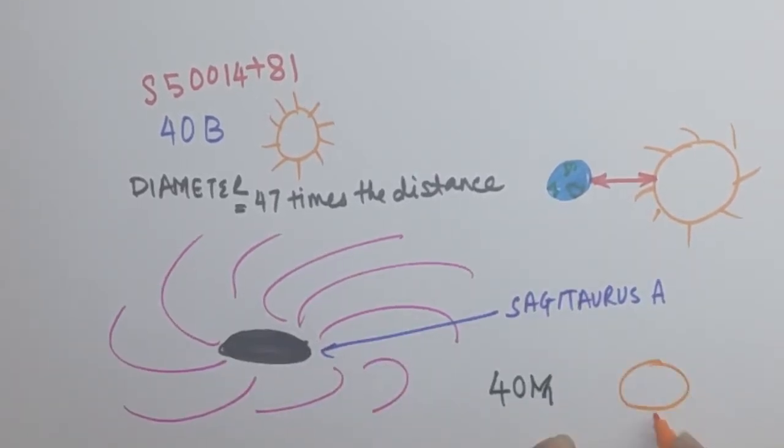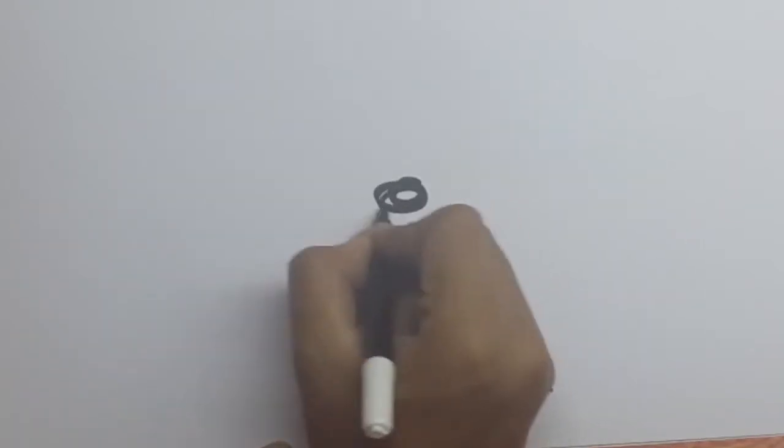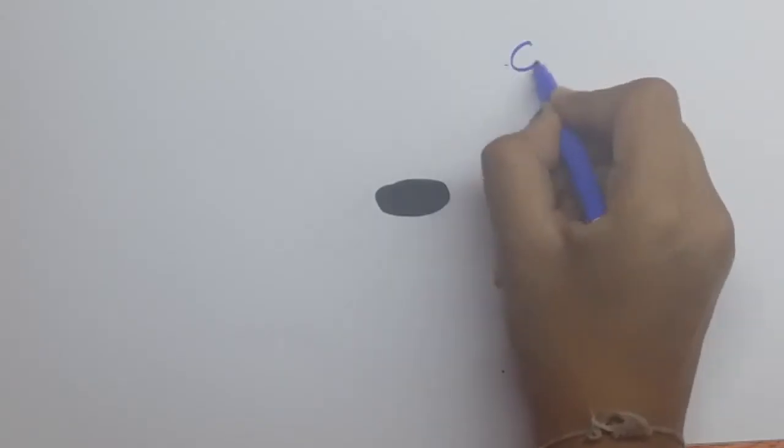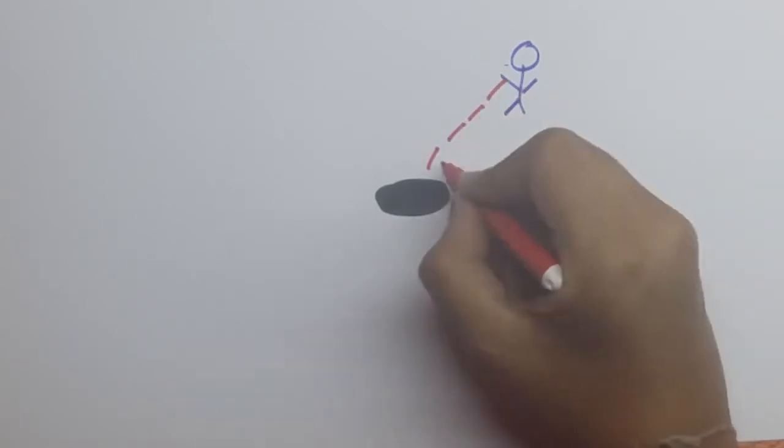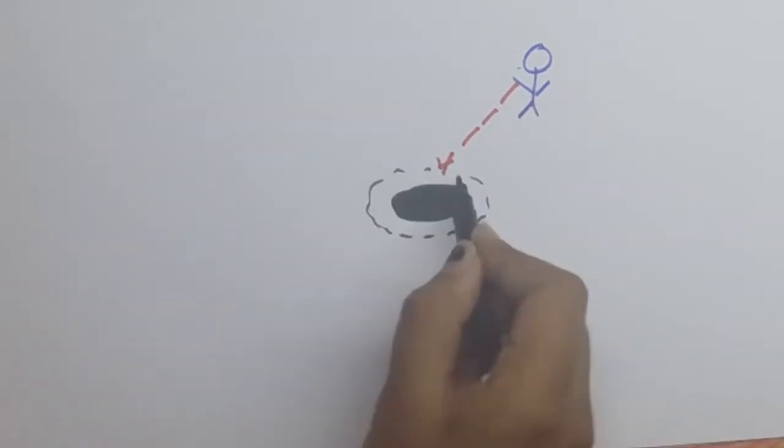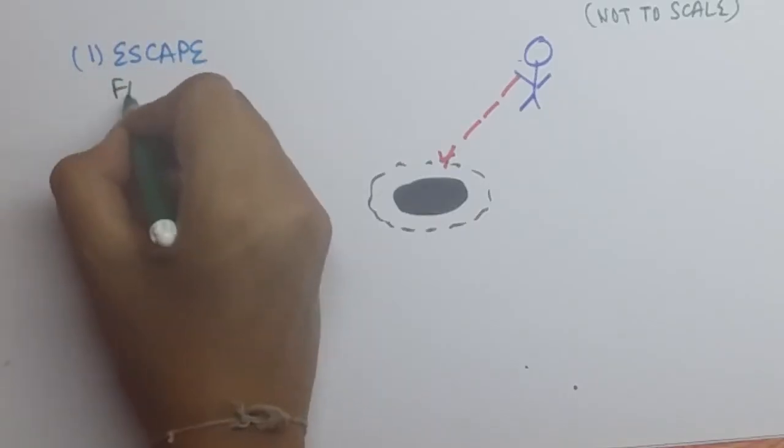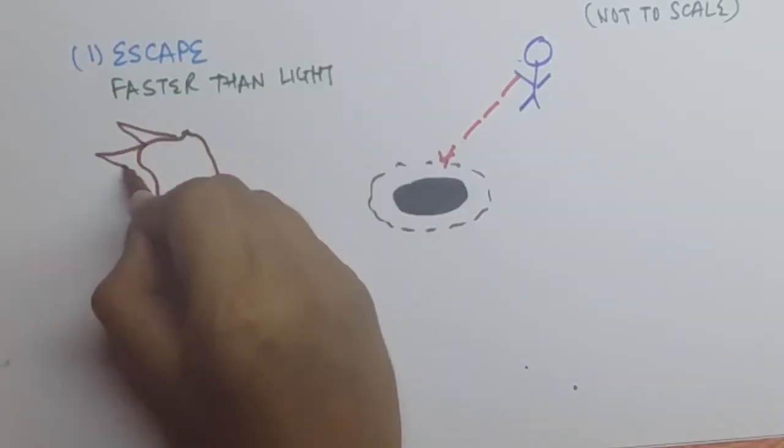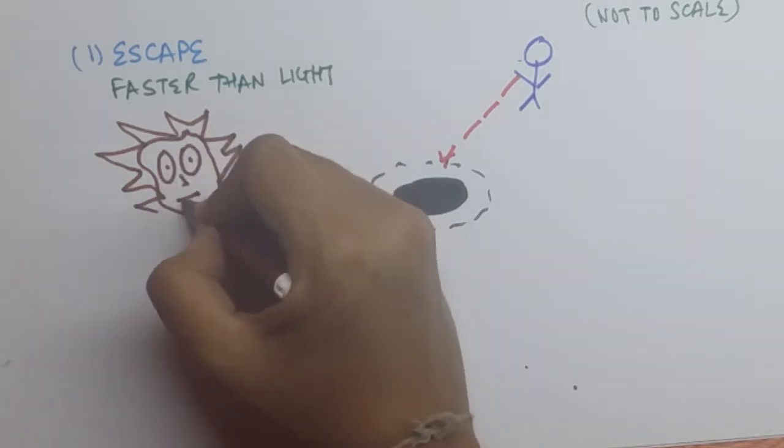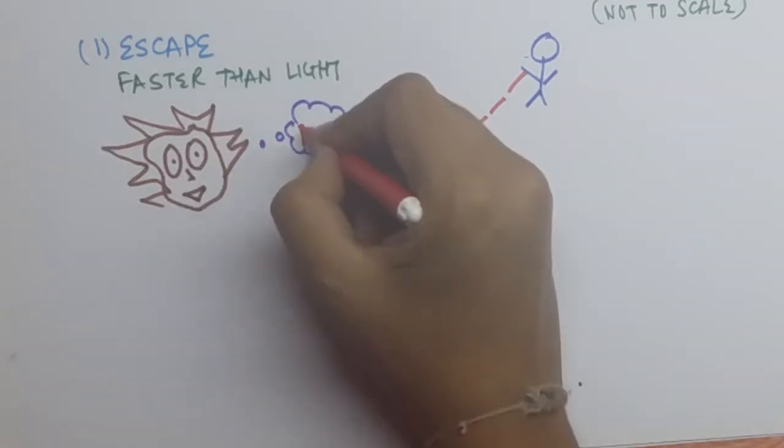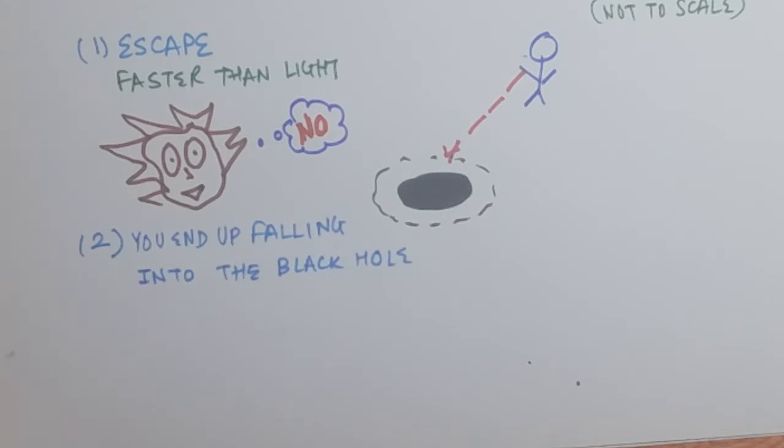Now comes the question: what happens if you're wandering in space and are near a black hole? You have two options. Number one, you try to escape. Remember Einstein: you cannot move faster than light, so there is actually no escape. Say you end up falling into the black hole.